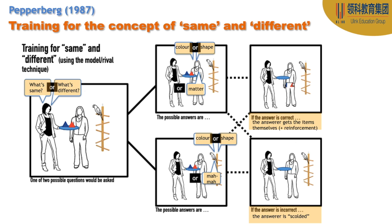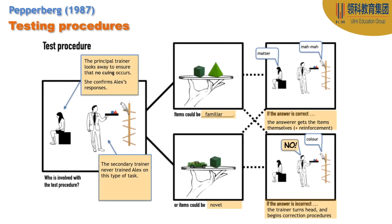That's the second training. The last third of the procedure is the test itself, where we now have two trainers involved. One is the principal trainer, who is looking away at the wall. Then we have a secondary trainer who is now testing Alex. The secondary trainer has never trained Alex on this particular task. Both of these aspects are important because they help keep the validity of the study intact. The items presented could be familiar things Alex has seen before, or novel items — one or two new things he's never seen before.